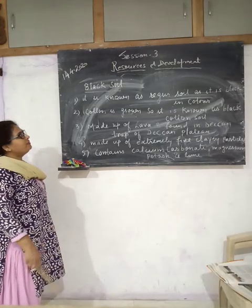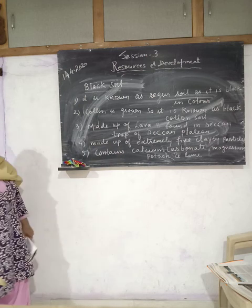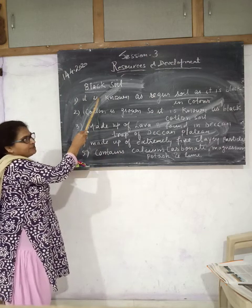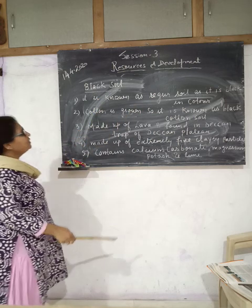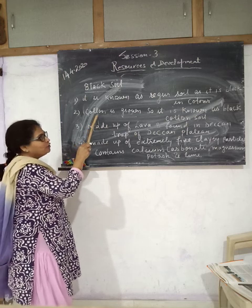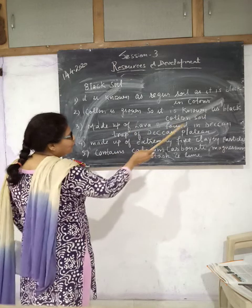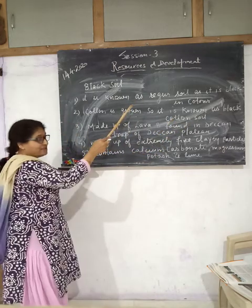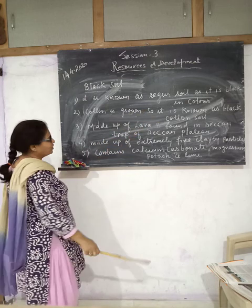Now let's come to our second soil type, that is black soil. As the name suggests, it is black in color. It is also known as regur soil. Since cotton is mainly grown in this black soil, it is also known as black cotton soil.